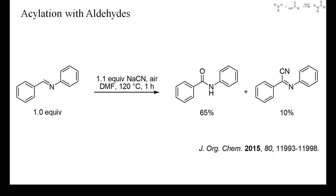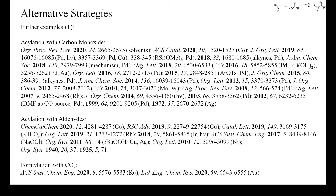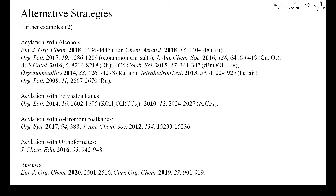The cyano-imine formed as by-product could also be transformed into the target amide by treatment with aqueous sodium hydroxide. Here are some more examples of acylations with carbon monoxide, aldehydes, and carbon dioxide. These can also be found in the description of this video. In addition to aldehydes, also alcohols and even some alkanes can be directly converted into amides by treatment with oxidants and an amine. Other, more exotic acylating reagents include polyhaloalkanes, alpha-bromonitroalkanes, and orthoformates. There are hundreds of methods to prepare amides from amines, but only few have a broad scope and make economic sense. I hope that with this video playlist you got a good overview and starting point to find the best conditions for your target amide.